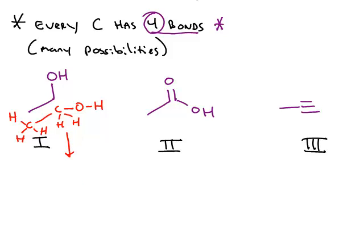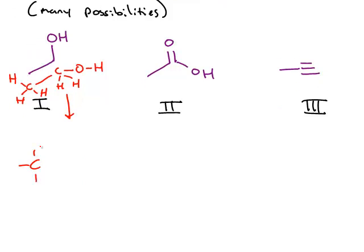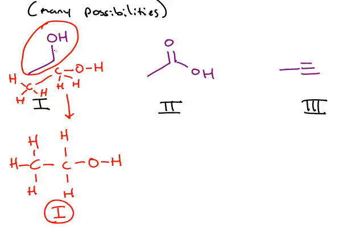If I rewrite this, the carbon on the end is connected to three hydrogens. It's connected to a carbon which is bonded to two hydrogens, and that carbon is then connected to an oxygen with one hydrogen. So structure number one is identical, and it's much quicker to write in this bond-line formula.